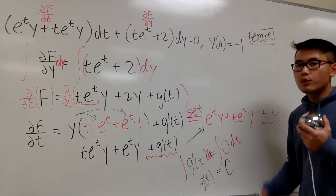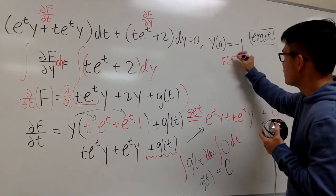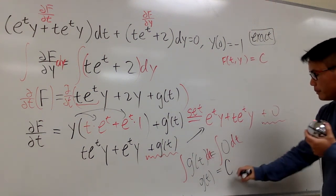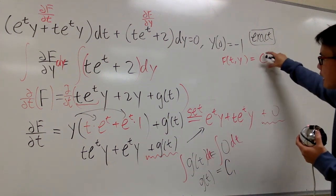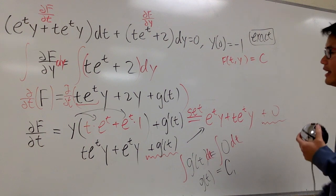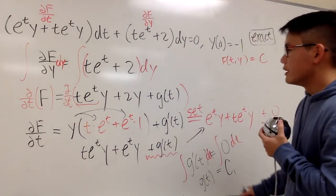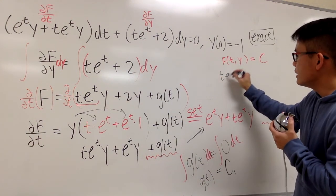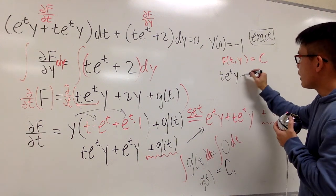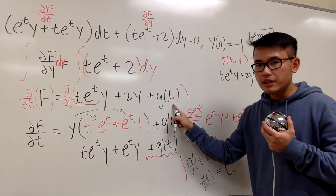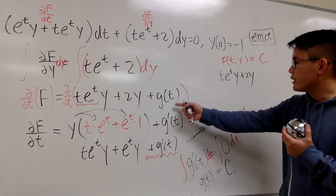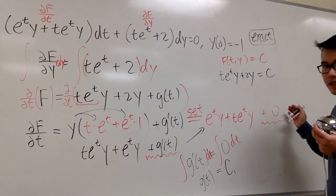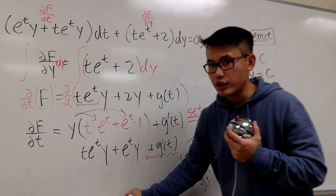At the end, we write the answer as F of T and Y equals a constant. So the general solution is: T e to the T times Y plus 2Y equals c. This is the general solution, and we are done.